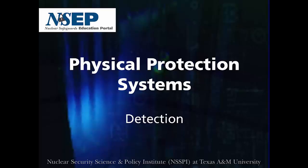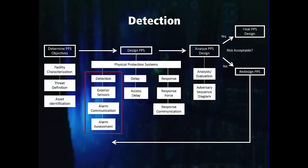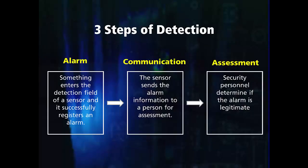In these slides, we will review information presented in the text and go through some examples on detection systems. In the overall process of the DEPO methodology, detection is the first of three components of the physical protection system. As we covered in the text, detection has three critical steps.